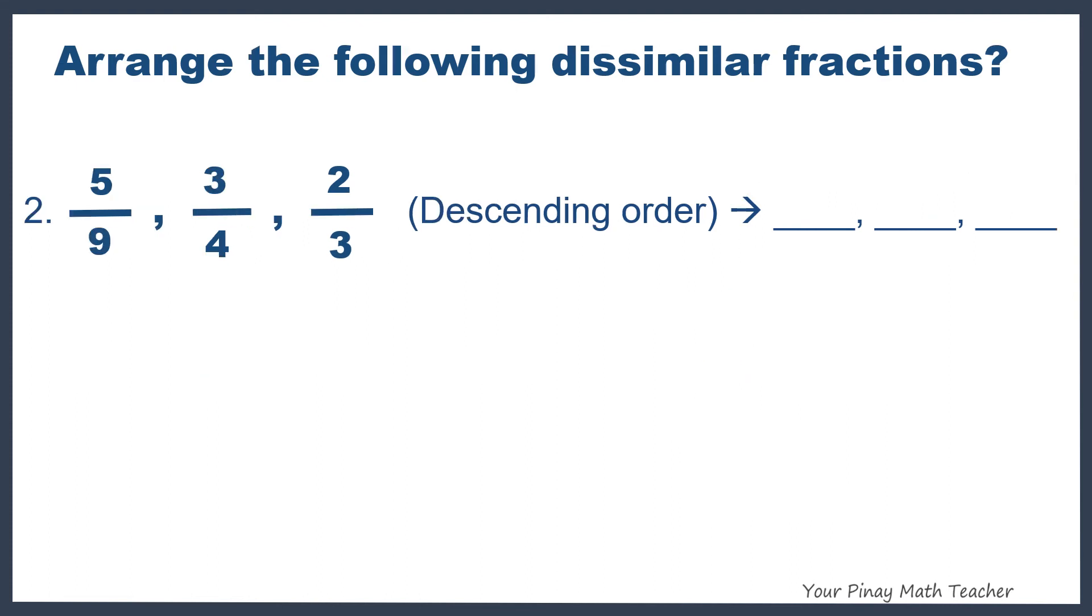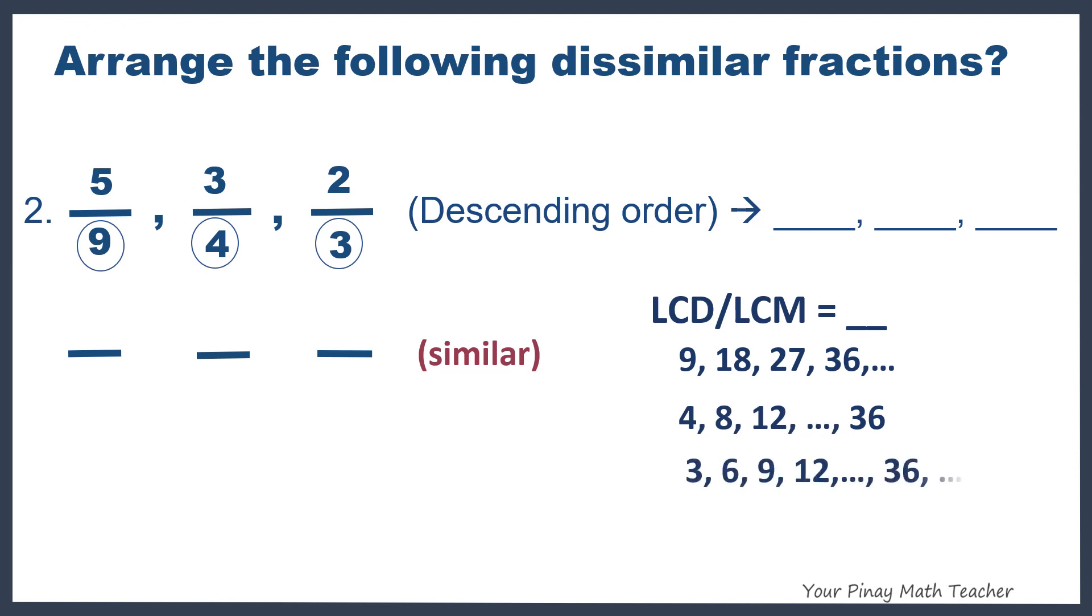Number 2. 5 9ths, 3 4ths, and 2 3rds are to be arranged in descending order or from the greatest to the least. Since its denominators are different, then we have to make the fractions similar by finding its LCD or LCM. The first few multiples of 9 are the following, 4, and 3. By the way, you don't need to do the list if you memorize the times table of 4, 9, and 3. Based on the list, our LCD or LCM is 36.